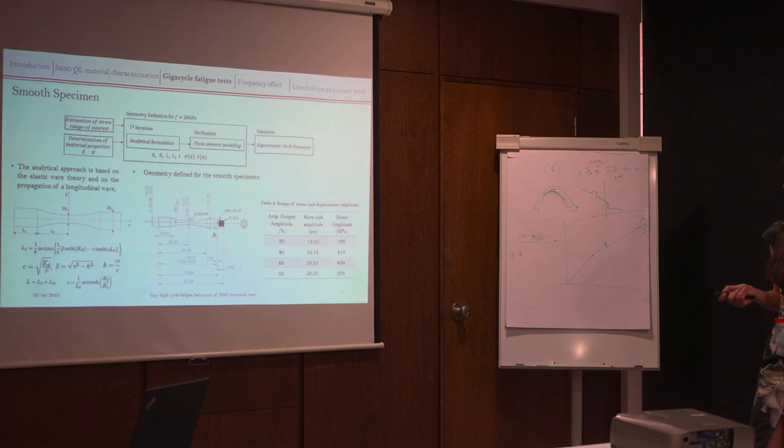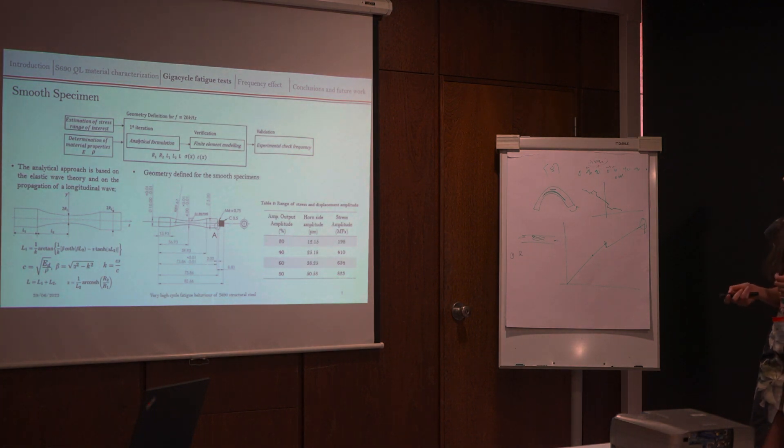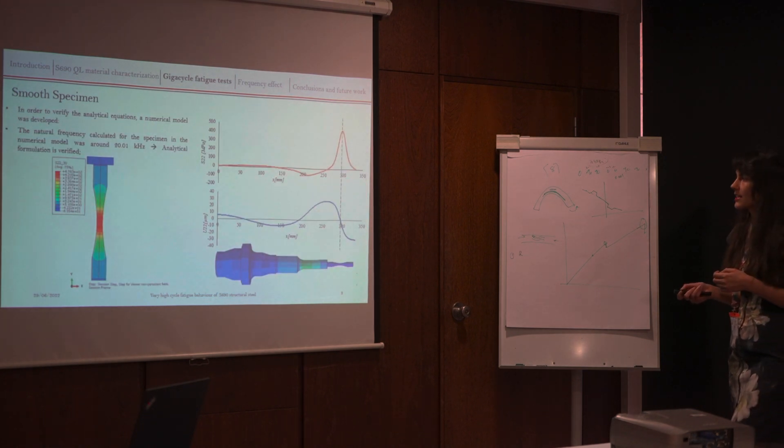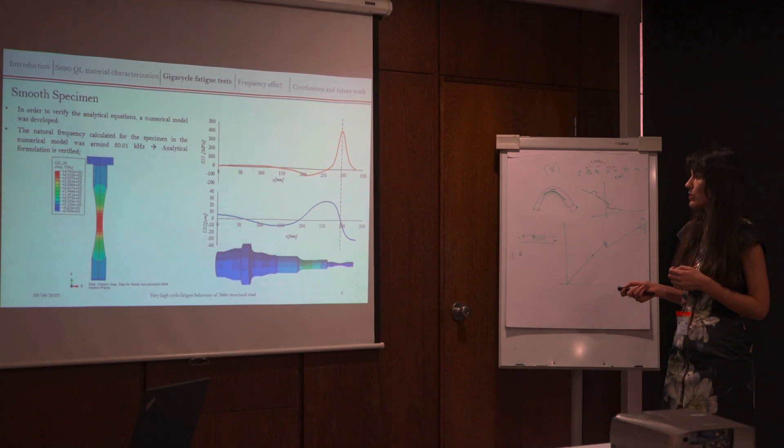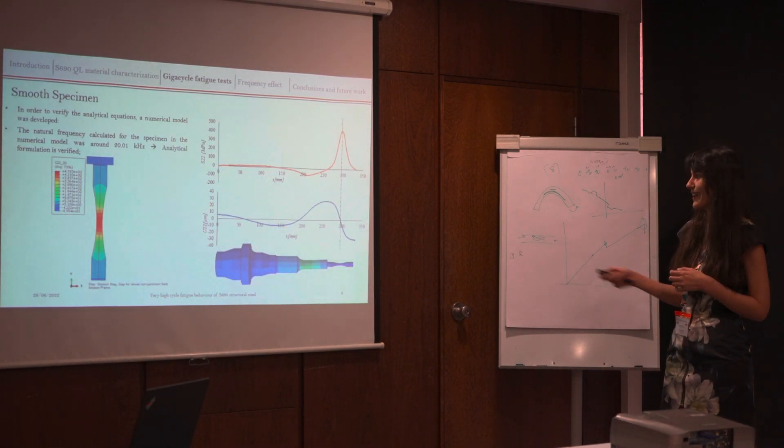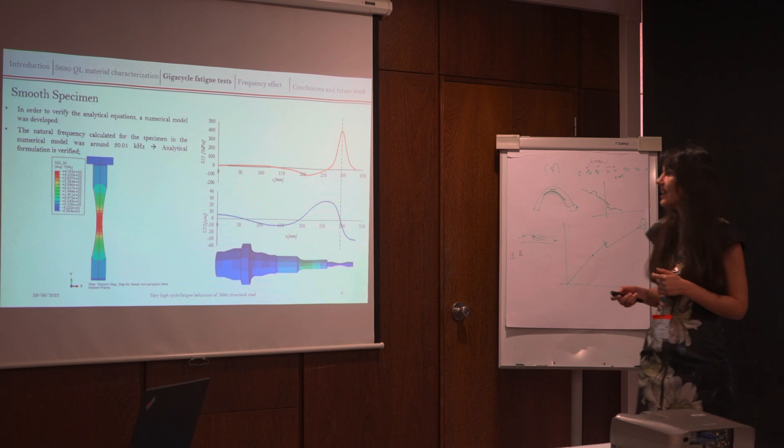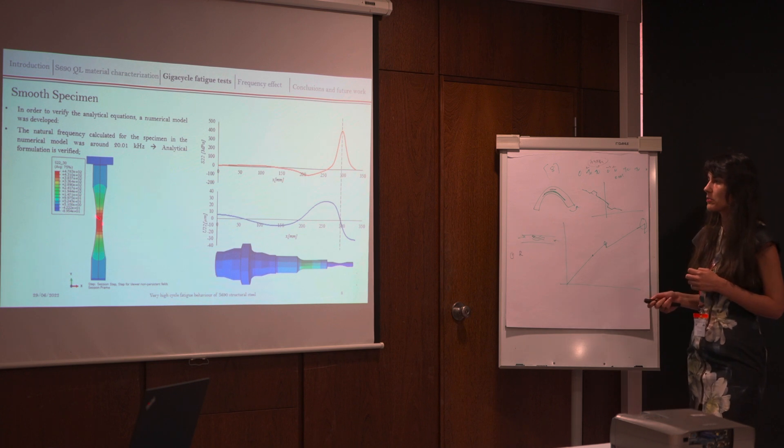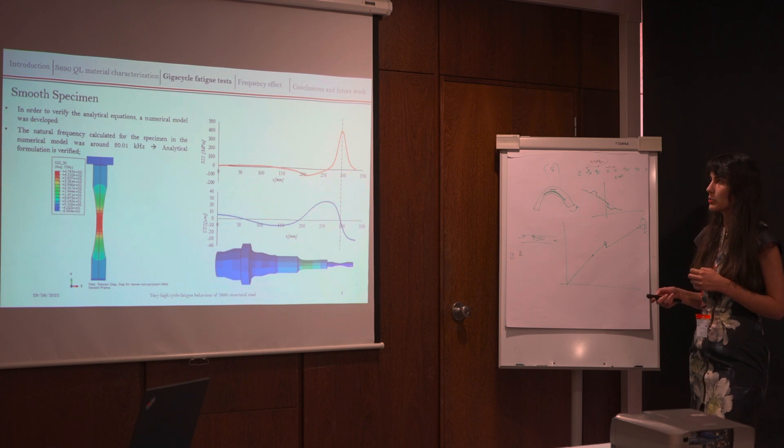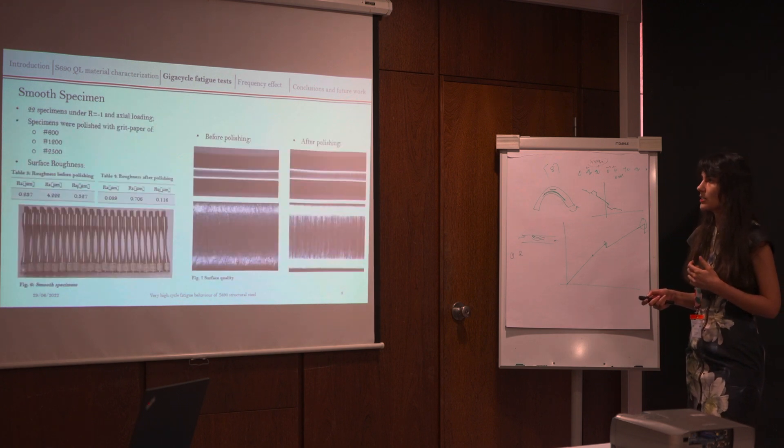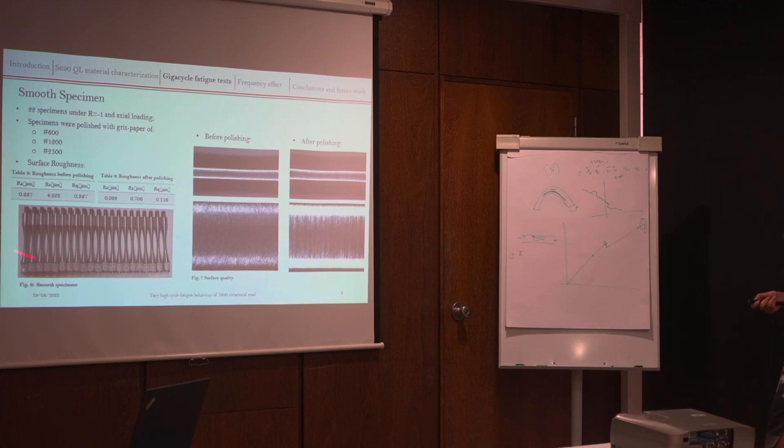You can see here the numerical formulation and the main geometry of our specimens. Here you can see our numerical model that will reproduce our experimental tests. As you can see here, we have the maximum stress here at the center, and we also verified our analytical approach. Of course, we need to manufacture our specimens. And this point is very critical because any defect at the surface would initiate the crack. So we needed to polish our specimens and we also measured the roughness.